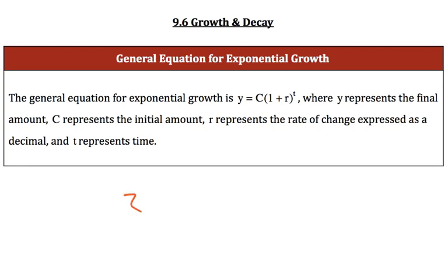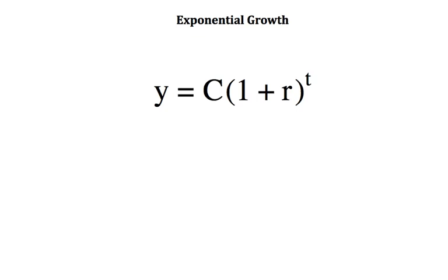Exponential growth means things grow with some sort of doubling pattern or something like that. I say doubling because that's easier to see than if I had a different pattern where I was multiplying from like 3 times 1.5 again and again and again. The general equation for exponential growth is y equals C times 1 plus r to the power of t, where y represents the final amount.